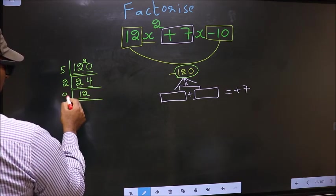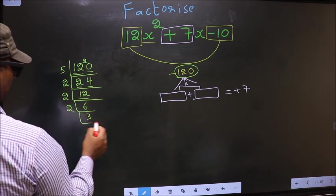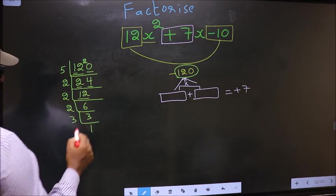Now here we have 12. 12 is 2 times 6. Now 6 is 2 times 3. Now we have 3, which is a prime number. So 3 times 1 is 3.